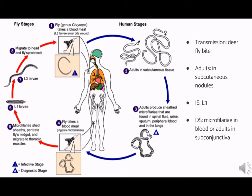During a blood meal, an infected fly of the genus Chrysops — which are day-biting flies — introduces the third stage filarial larvae into the skin of the human host. The larvae develop into adults that commonly reside in the subcutaneous tissue. Adult worms migrate in the subcutaneous tissues, mating and producing more larvae. Eventually, microfilariae are released by the female adult; during the day they are found in the peripheral blood, but during the non-circulation phase they are found inside the lungs.